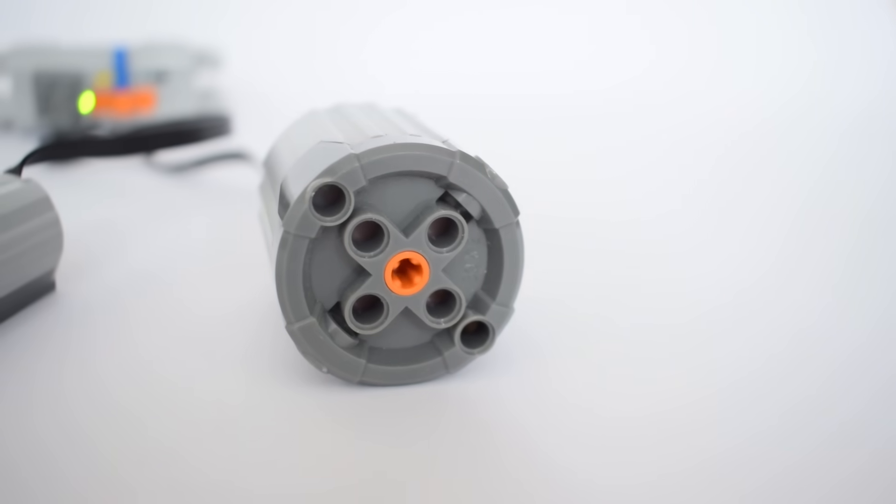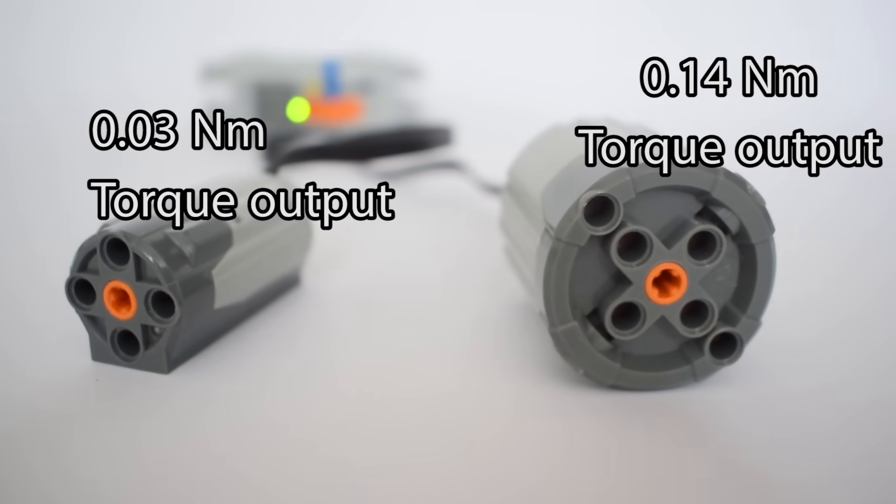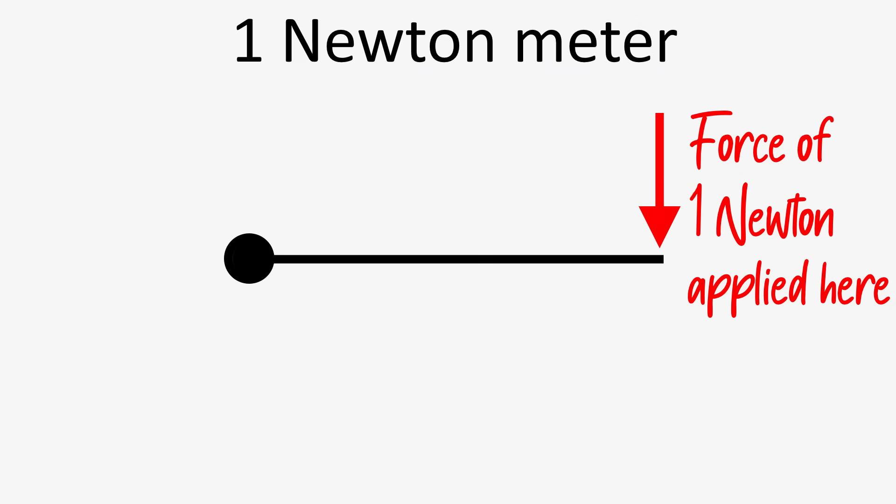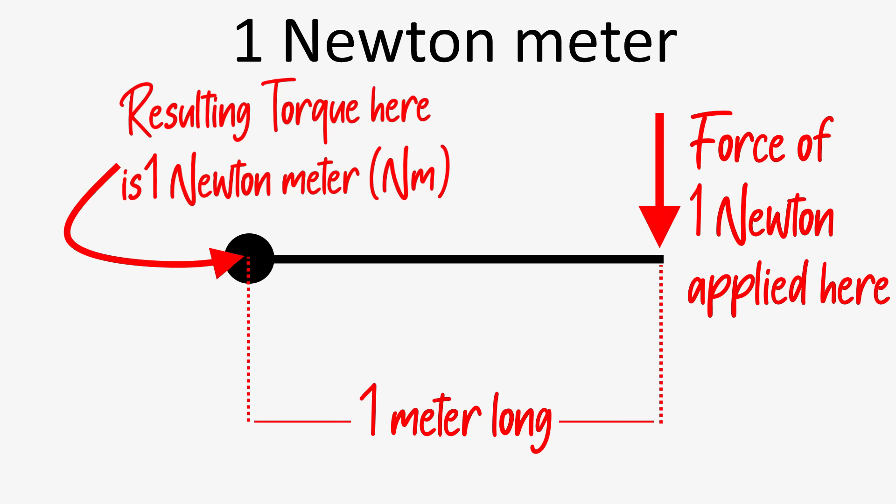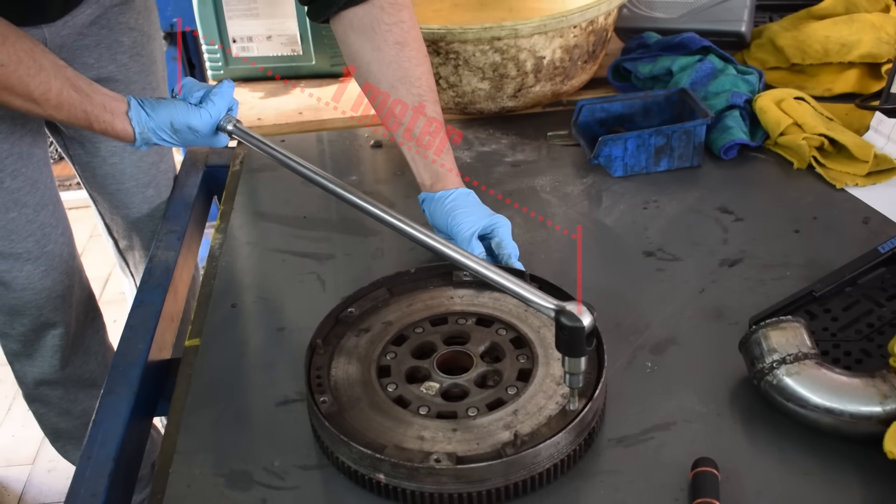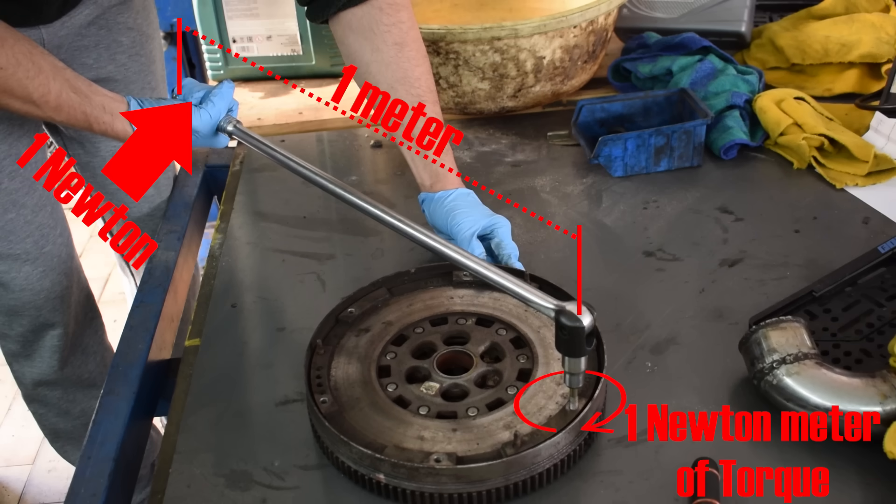So our Lego motors are outputting a certain amount of torque that we have expressed in newton meters. One newton meter of torque simply equals the force of one newton applied at the end of an arm that is one meter long. So for example, if we take this bolt and use this wrench, which is one meter long, and apply a force of one newton at the end of that wrench, the resulting torque present at the bolt will be one newton meter.